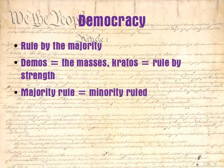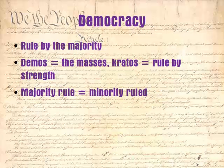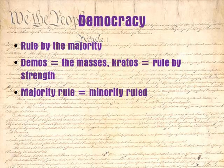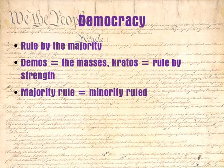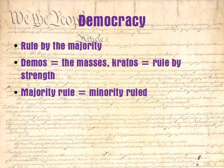Majority rule is minority ruled. In essence, it's the exact opposite of an oligarchy. Whereas an oligarchy allows a select few to subjugate the many, a democracy allows the many to impose their will on the few.